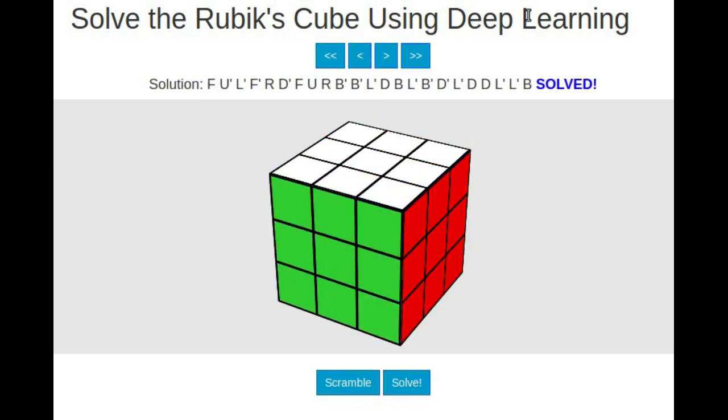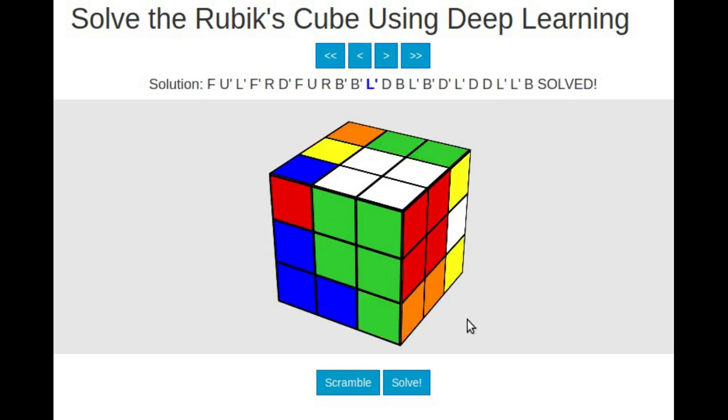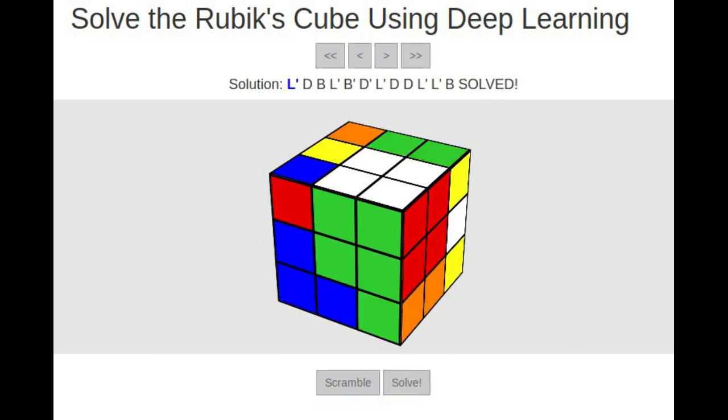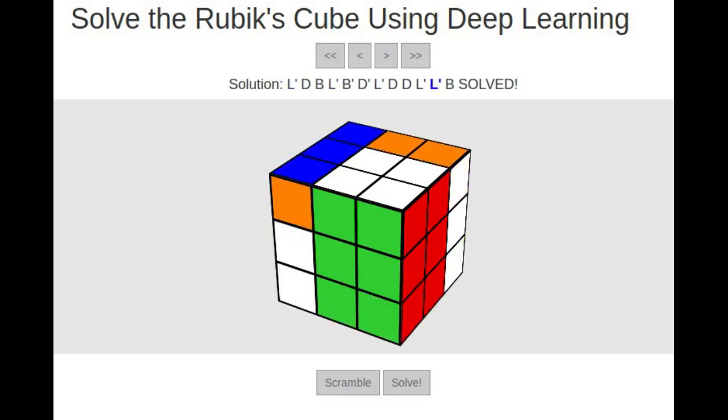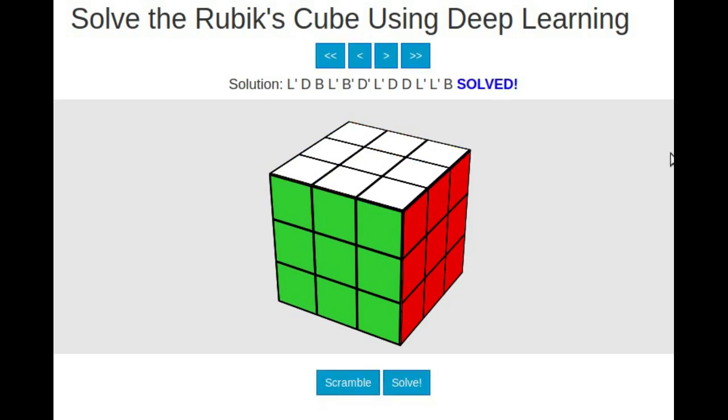The solution to the Rubik's Cube involves more symbolic, mathematical, and abstract thinking. So, a deep learning machine that can crack such a puzzle is getting closer to becoming a system that can think, reason, plan, and make decisions.